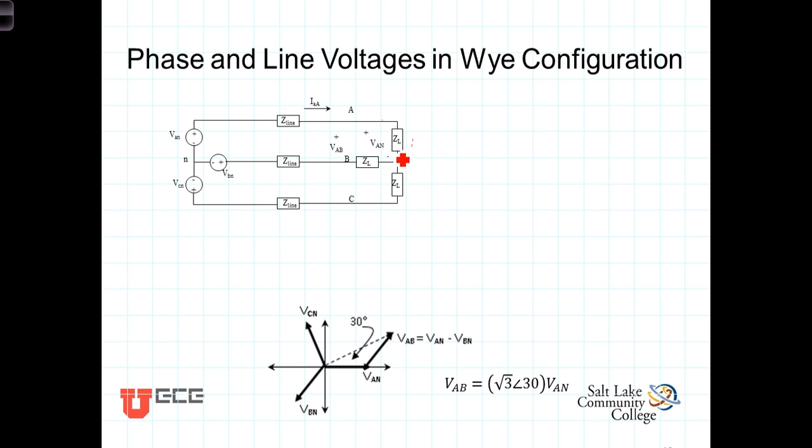It's the voltage right across there, or VBN, the voltage right across there, or VCN, the voltage right across there. Those phase voltages are different than the line voltages,